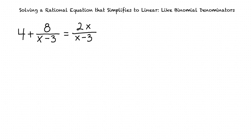Consider the following example. Find the value of x when 4 plus 8 over the quantity x minus 3 equals 2x over the quantity x minus 3.